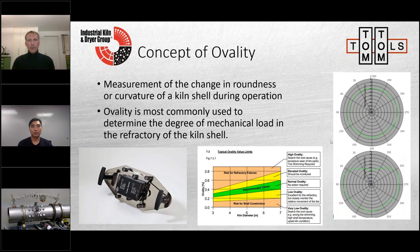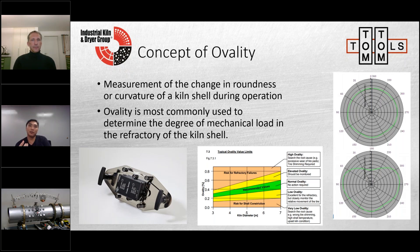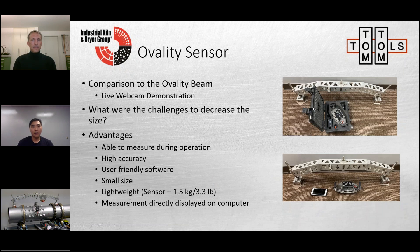We've also done work outside of normal ovality measurement — using the sensor on stiffener rings for dryers and seeing major deformations due to stress at those particular spots. Because the ovality sensor uses strain gauges, it's useful for understanding shell deformation even outside of normal kiln tire ovality applications.